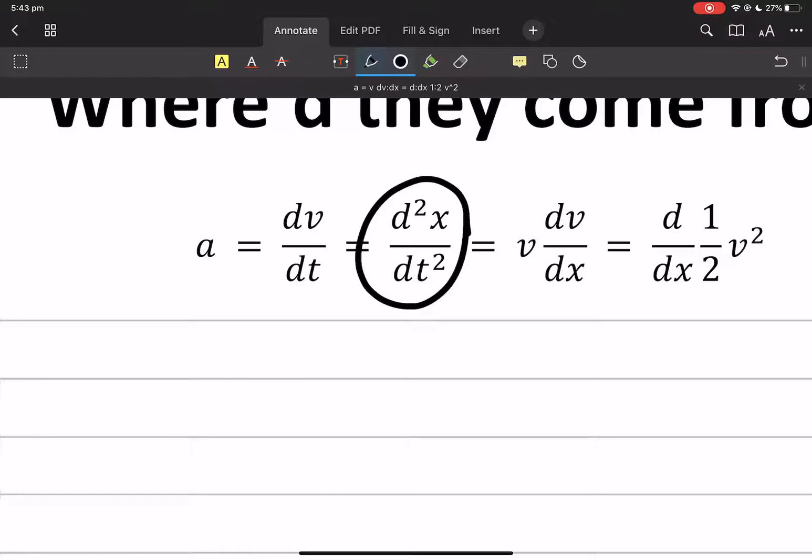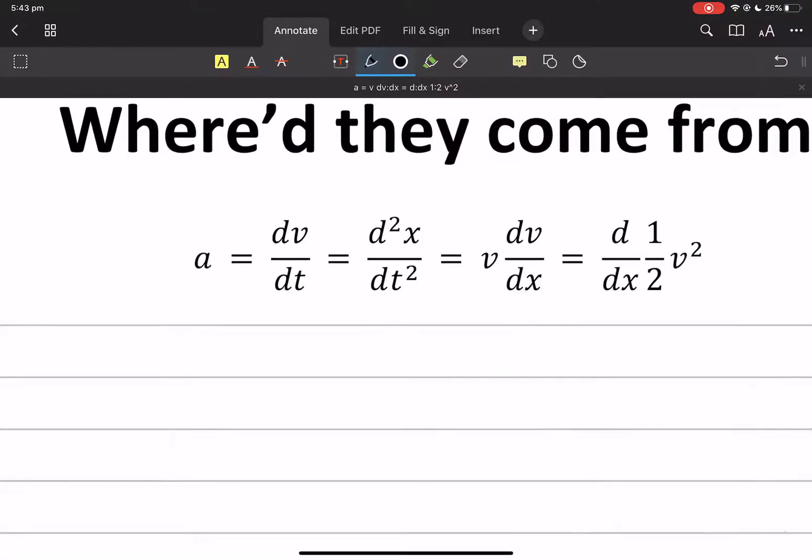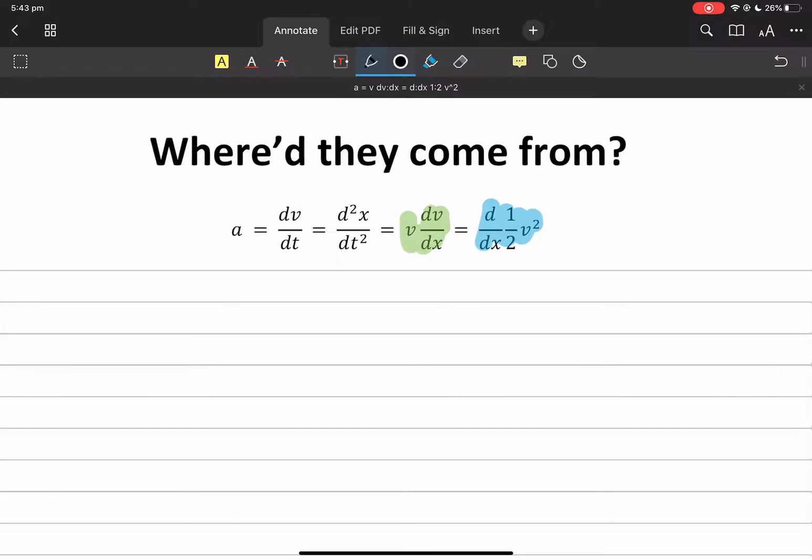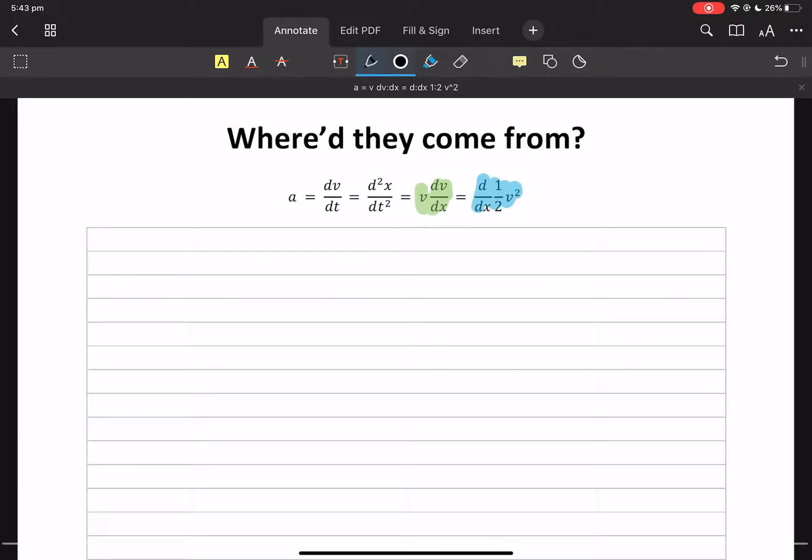dv/dt is acceleration, we know that from grade 11. The second derivative of displacement is acceleration, we know that from grade 11. If you don't know that, you're looking at the wrong video. We're really interested in where did that come from and where did that come from. So we're going to start with something that we know.